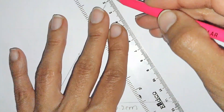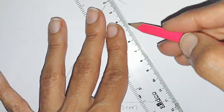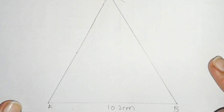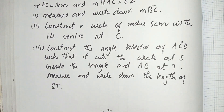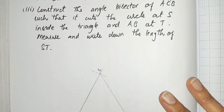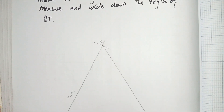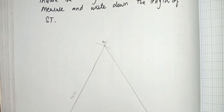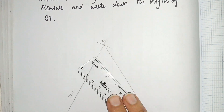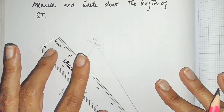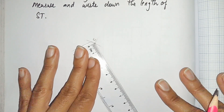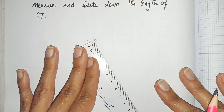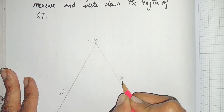Now join B with C. This is our required triangle A, B and C. In part number one, we measure and write down BC. We have to measure the line BC. BC is equal to 10.9 cm.